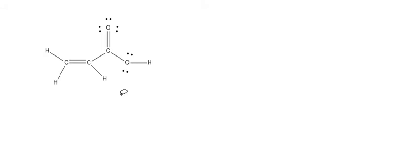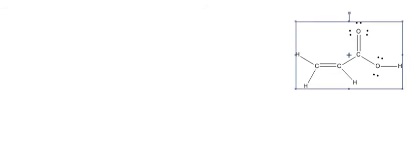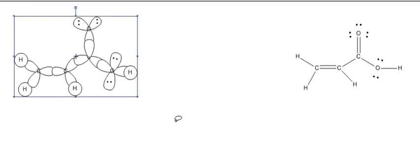Once we have our correct Lewis structure, the next thing that we're going to do is we're going to fill in all of the sigma bonds. And I've actually done that in this structure. I've shown all of the carbons, hydrogens, and oxygens connected by sigma bonds.